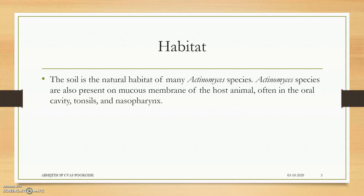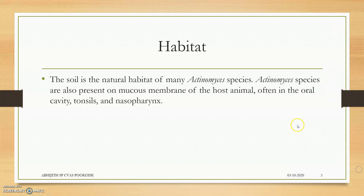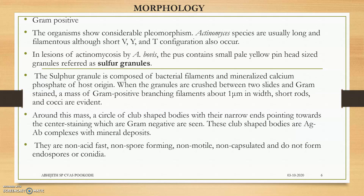Habitat: soil is the natural habitat of Actinomyces species. Actinomyces species are also present on the mucous membrane of the host. The morphology is gram-positive and they have got a V-shaped, Y-shaped, T-shaped configuration.